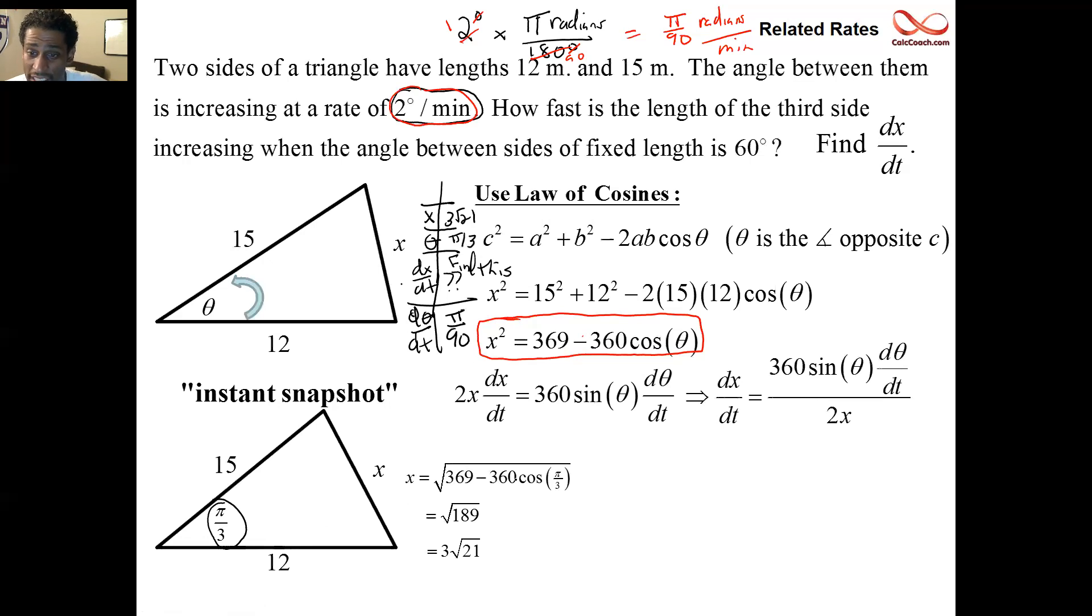Okay, with that, I'm going to plug those guys in. Now, you don't have to solve for dx/dt like I've done here. But why not? It can't hurt. Be careful, you could make an algebra mistake. I just divide it by 2x. It's pretty simple. Okay, so here we go. Theta gets π/3 plugged in. dθ/dt is π/90. x = 3√21. Put all these guys in there.